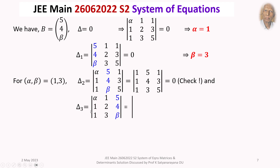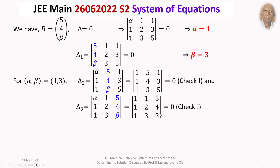Delta₃ is the same as delta with the third column replaced by B, that is (5, 4, beta). Putting alpha equals 1 and beta equals 3, we expand the determinant with rows (1, 1, 5), (1, 2, 4), (1, 3, 3) by the first row, and the answer is 0. So this determinant is also 0. The details are left for you to verify.